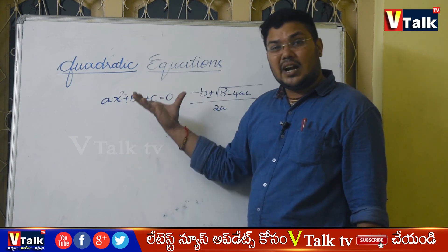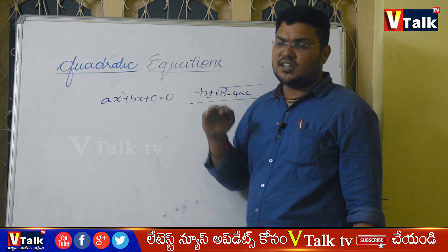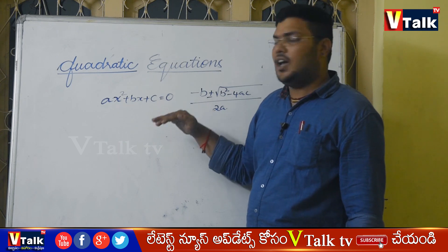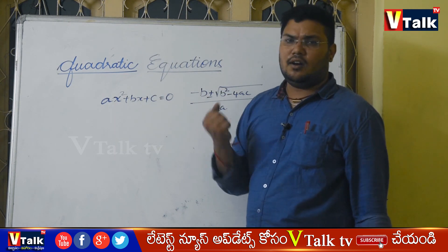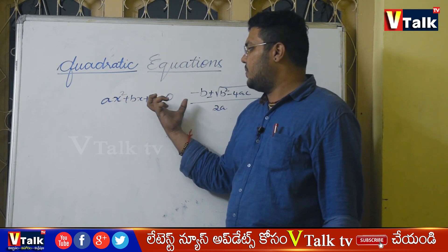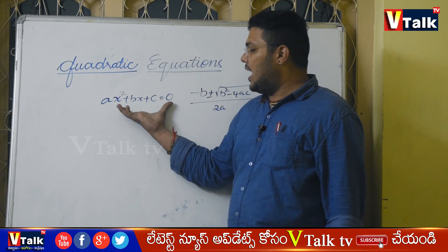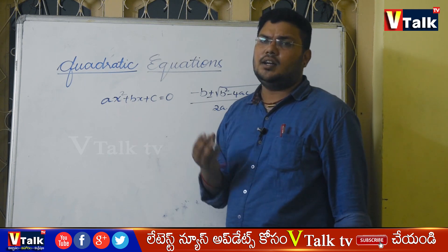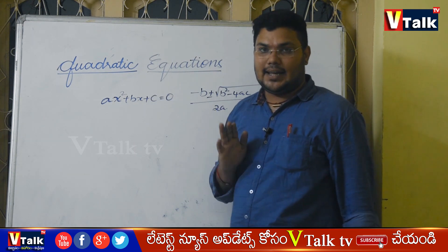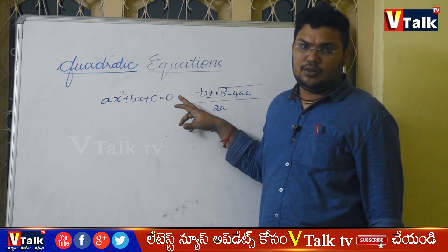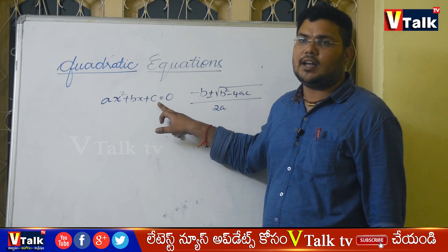Using the completing squaring method on the general form of a quadratic equation, if you follow the method you will find the roots. The general form is x squared plus bx plus c equal to 0. Now, what do we do first?